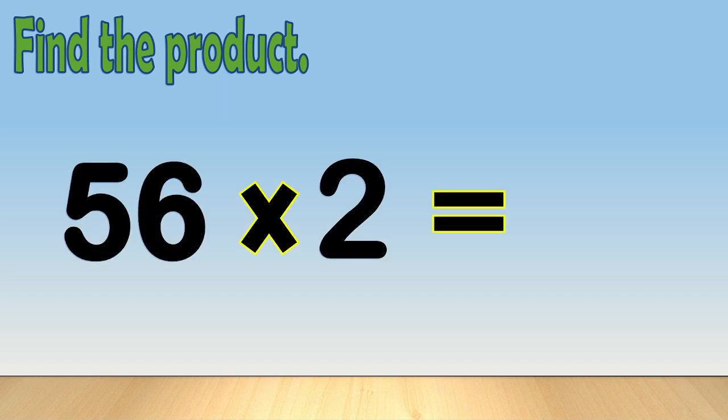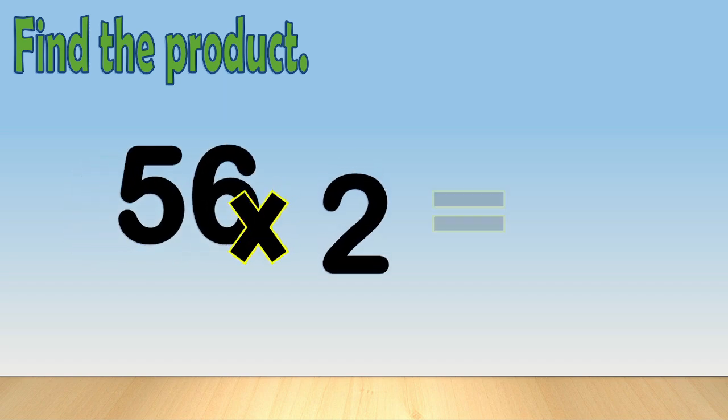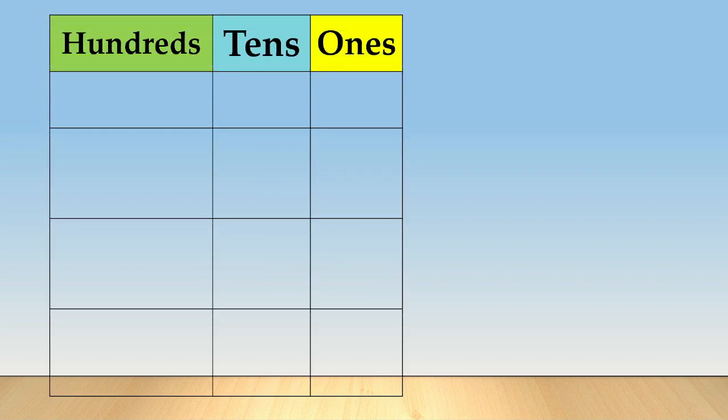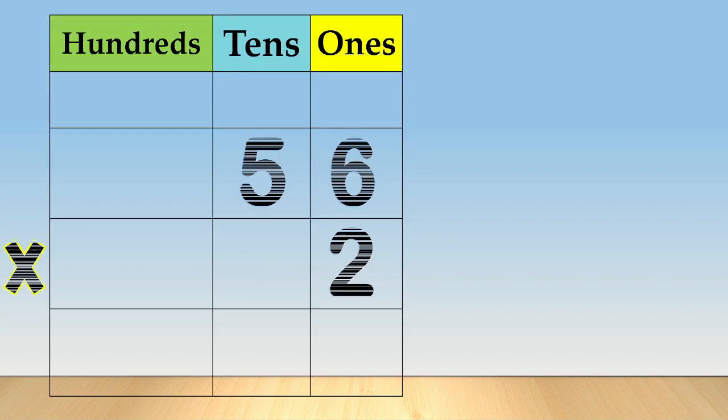Now, let's get started. Find the product: fifty-six times two. First, arrange the numbers in columns like this. Place each digit in a column based on its place value. Next, multiply the digit in the ones place with the multiplier, two.